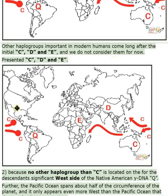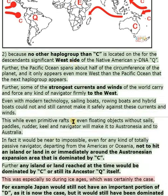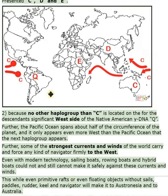Presented: C, D, and E. Point 2: Because no other haplogroup than C is located on the — for the descendants — significant west side of the Native American Y-DNA-Q.